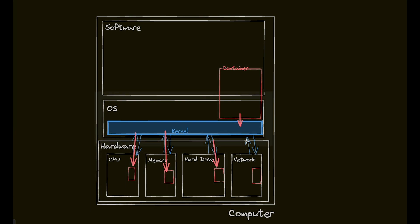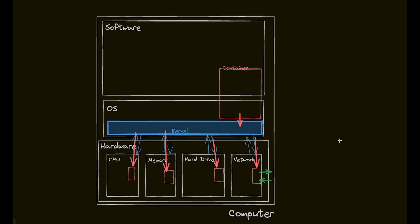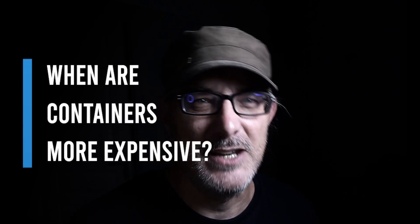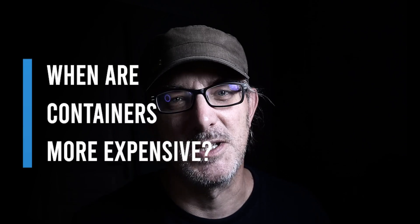A container simply speaks to the same kernel as the rest of the computer to interact with the hardware, sharing the same hardware and part of the operating system. All it can do to communicate is use its share of the network hardware to send and receive network messages, including to other containers on the same computer. Because the container shares the hardware and the OS instead of simulating them, a container is generally less expensive to run than a virtual machine. However, there is a situation when a container is more expensive than a virtual machine — can you see when that would occur?